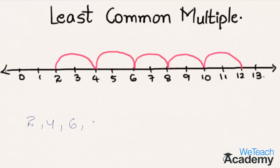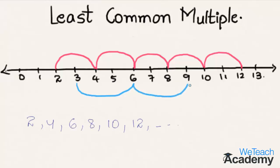The multiples of 2 are 2, 4, 6, 8, 10, 12 and so on. Now let us mark the multiples of 3 on the number line with a curved line. Starting from 3, we reach the next multiple 6, then 9, and then 12. The multiples of 3 are 3, 6, 9, 12 and so on. Now let us see where these two lines meet at a common number.